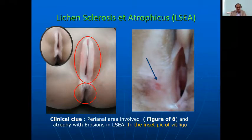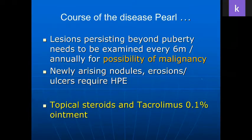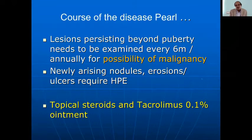Sometimes dermatologists try the same treatment for both. The reason to differentiate between vitiligo and lichen sclerosus et atrophicus (LSA) is that lesions persisting beyond puberty need to be examined every six months or annually for the possibility of malignancy in LSA.